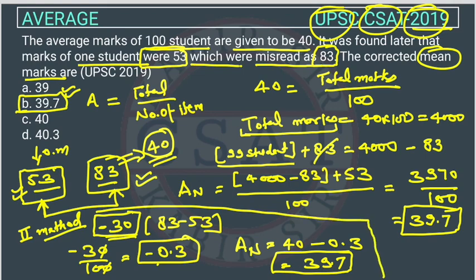If it were the other way around — if the original marks were greater than the misread value of 83 — then the adjustment would be positive, and it would get added to the current average. So the answer is 39.7. If you have any problems with this, you can comment or call or WhatsApp us, and I will explain the question individually.